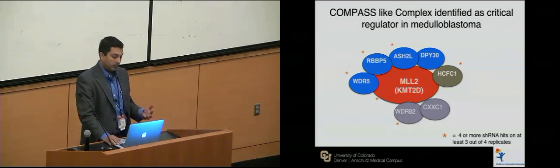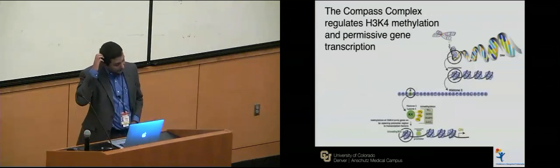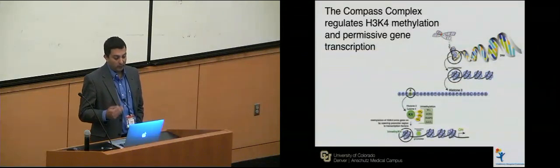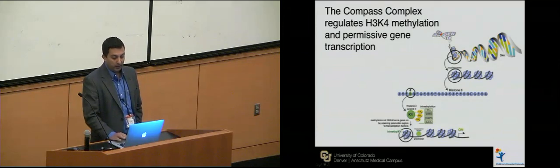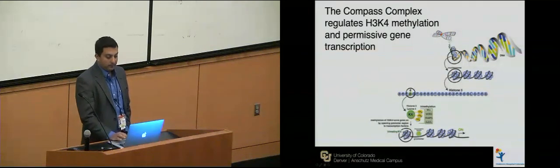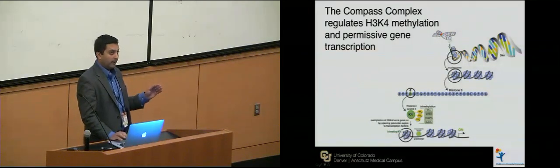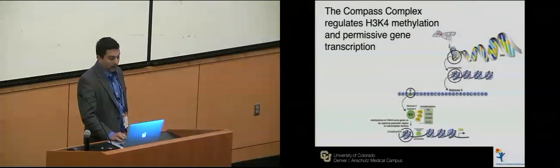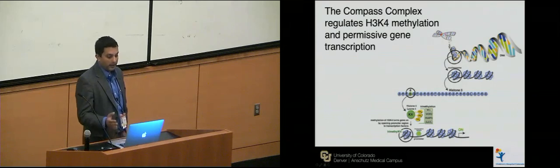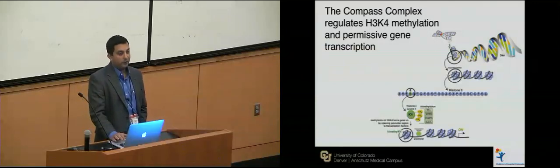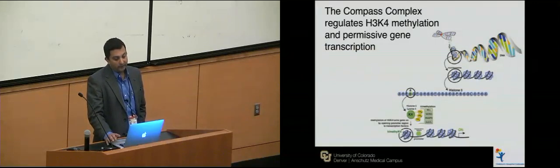The COMPASS-like complex regulates H3K4 methylation and tends to be important for permissive gene transcription. Looking at the histone tail, lysine 4 can be monomethylated to work at enhancer regions, or trimethylated to work at promoter regions. In the context of trimethylation, the COMPASS-like proteins complex trimethylates K4 to allow permissive gene transcription, and we think this allows transcription of differentiation programs.